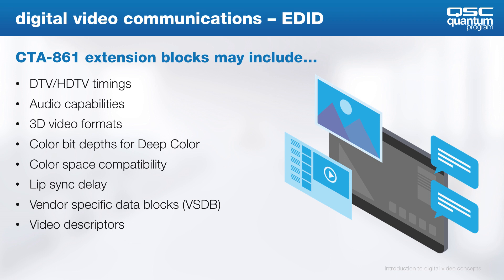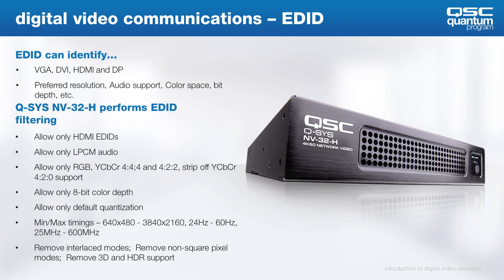It contains additional sync characteristics not already defined in the primary block 0. As we've learned, EDID is read from the sync, display, or projector. It identifies connection type, supported resolutions, its preferred resolution, supported audio, and color space information. Based on reading EDID, a source or repeater device knows what to send and will format its video data appropriately.